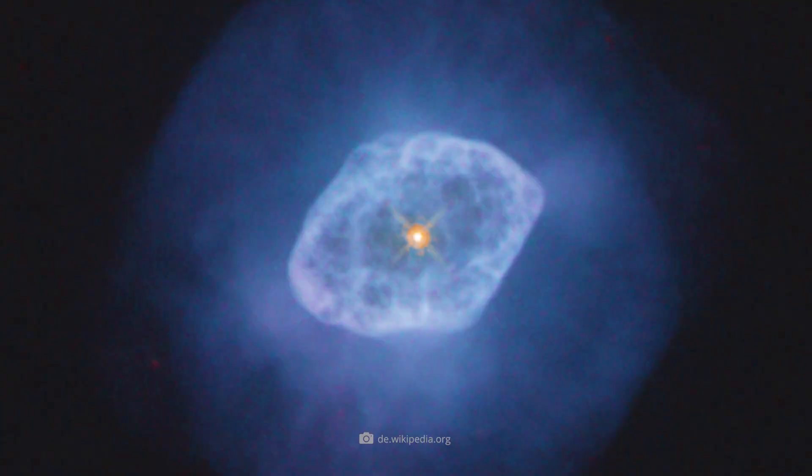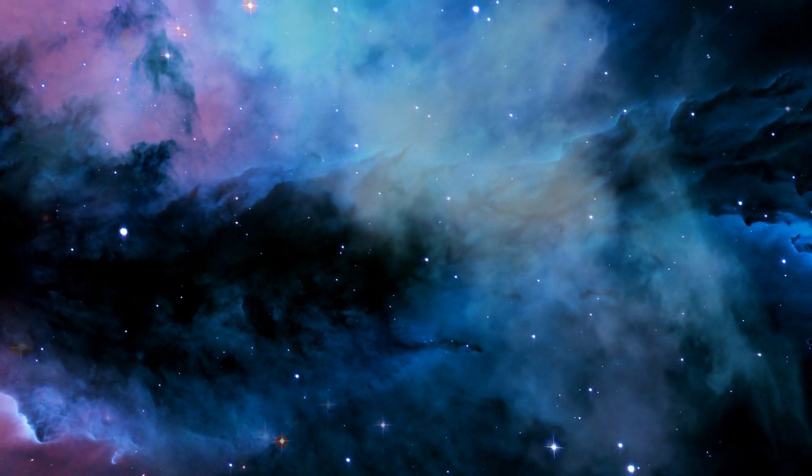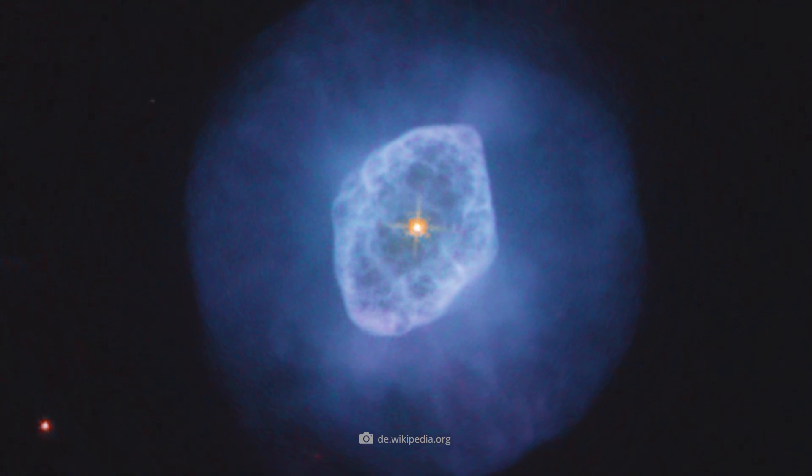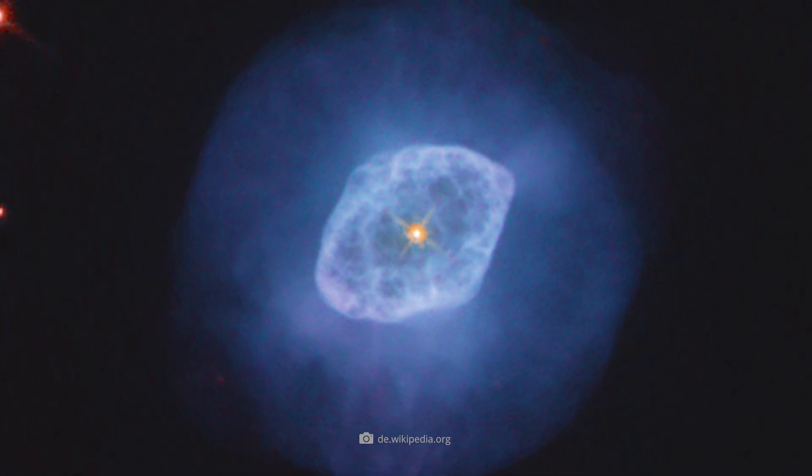Furthermore, the images taken by Hubble show the complexity of the inner structure of the planetary nebula. Among other things, we see a spherical outer halo, which is expanding much faster than the inner layers of the nebula. The two inner regions, which have the shape of ellipsoidal shells, also appear to be oriented differently.